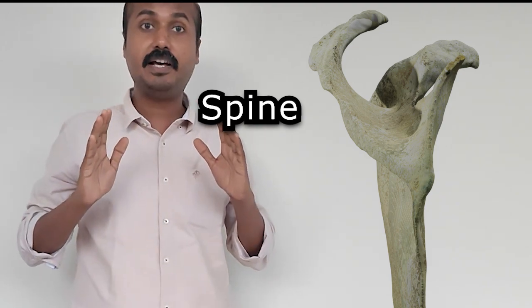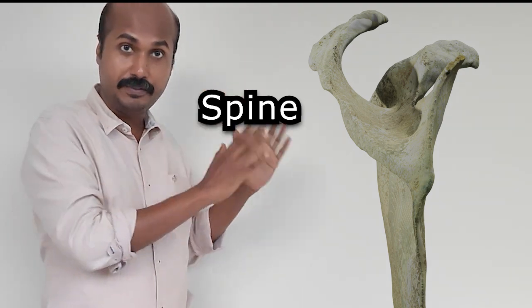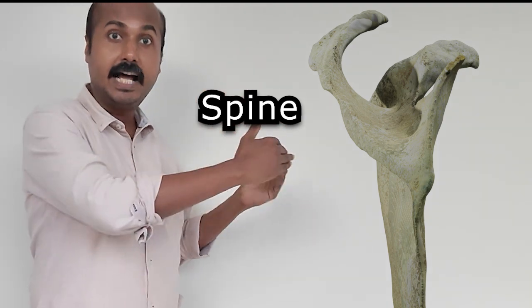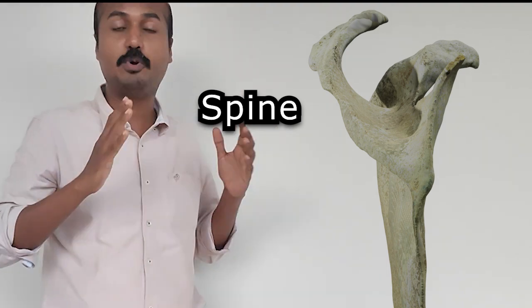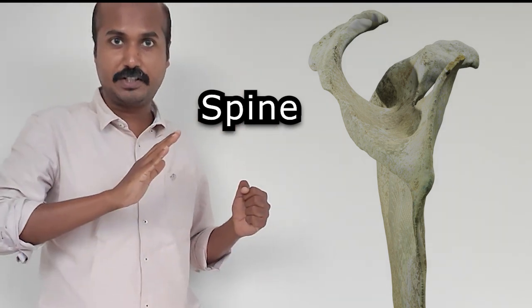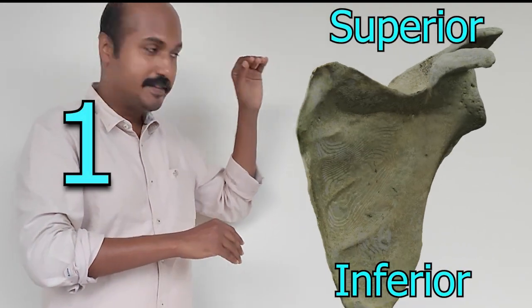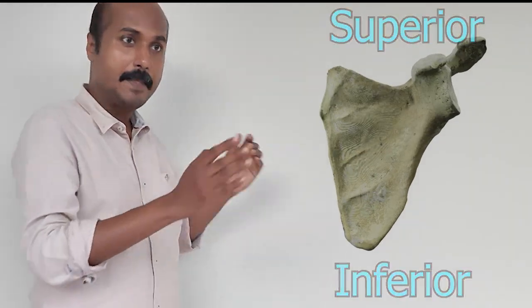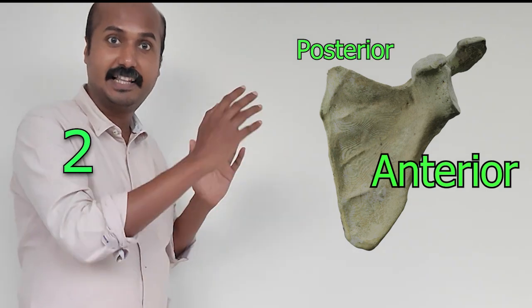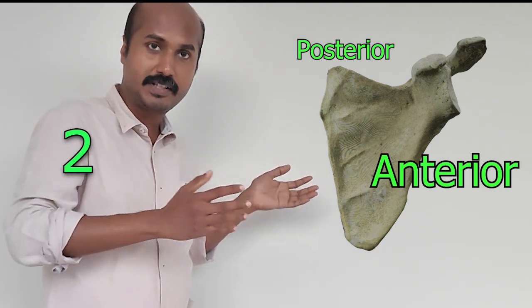So the spine of the scapula is the prominent process of the scapula blade that projects posteriorly. That is how you identify the posterior aspect of the scapula. So the opposite is the anterior aspect of the scapula. So we have already identified the superior and inferior and the posterior surface and the anterior surface. How did you identify the posterior and anterior surface? By identifying the spine of the scapula, which is directed at posterior.